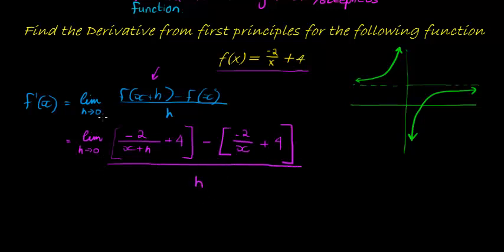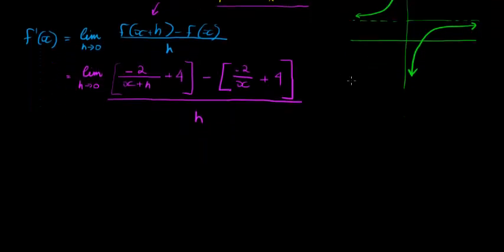Now you can see we can still not substitute h with zero because h is in the denominator. So the first thing we're going to have to do is simplify. The first step in simplifying is adding these two fractions. Now you will notice that we have a plus 4 here and a positive 4 there, but the negative makes it a negative 4, so those two constant values will cancel out.